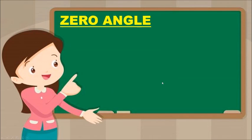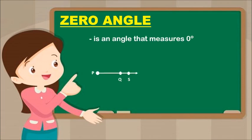Zero angle is an angle that measures 0 degrees. This is how it looks like, and it is read as: Angle SPQ is a zero angle.